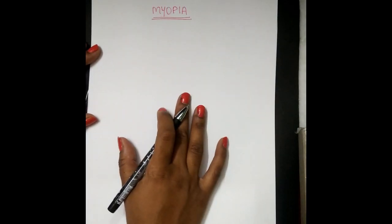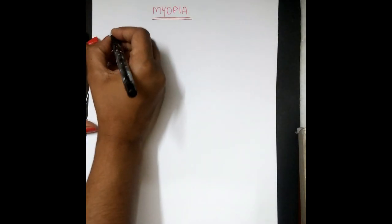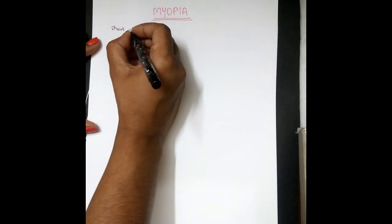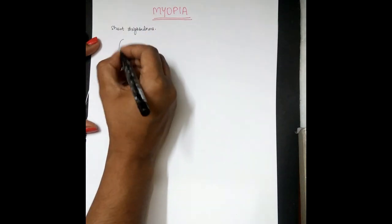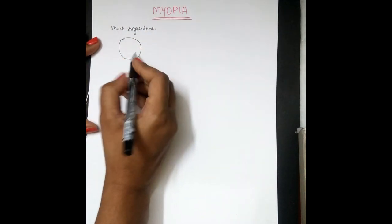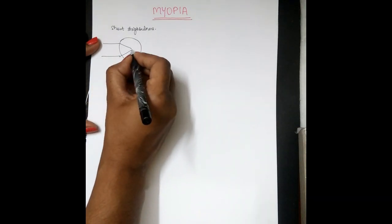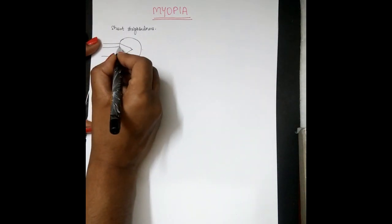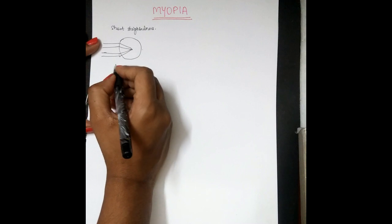Hi friends, this is HCV Hunter. Topic for today is myopia. I will discuss one by one all the refractive errors. Myopia is also known as short-sightedness. If we consider this is an eye, the rays coming from infinity will fall very much in front of the retina. It should always fall on the retina, but here they are focusing in front of the retina — this is known as myopia or short-sightedness.